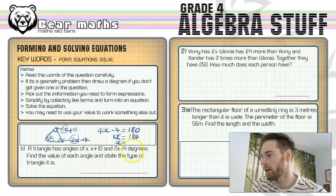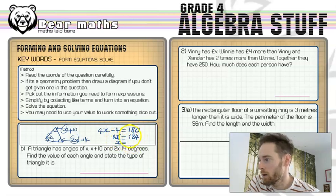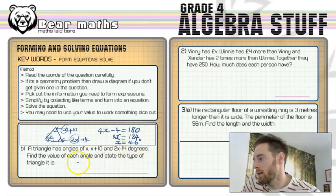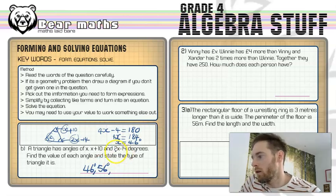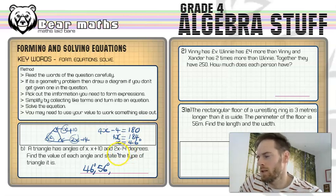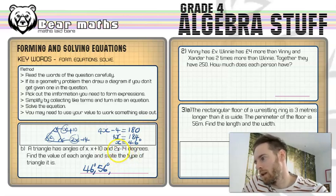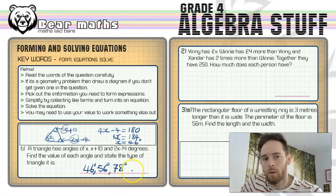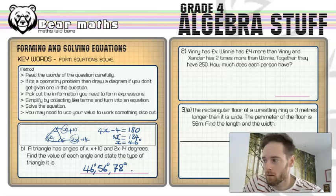So we're going to add 4 to both sides. That's 184. 4x is 184. And then we'll divide both sides by 4 to get what x is. And then we need to give all three angles. So if we're popping it into here, we're going to go in 4 times with 2 left over, and then 6 times into 24. So x is equal to 46. So I've got 46 degrees. I've got x plus 10, so 46 plus 10 is 56 degrees.